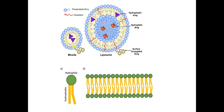You can see here this micelle, in which drugs are conjugated on their surface. This is the structure of liposomes and you can see the phospholipid bilayer. The double layer, and the red color you can see — these are cholesterols. This one is the hydrophobic drug and this one is the hydrophilic drug: one is water soluble and the second one is lipid soluble.